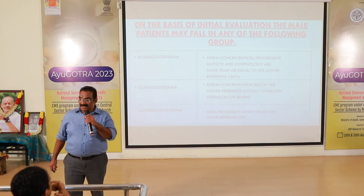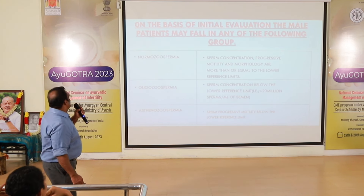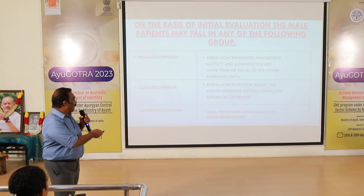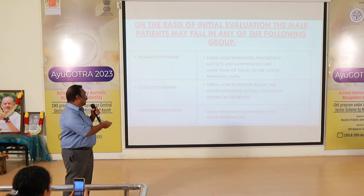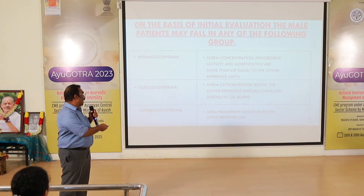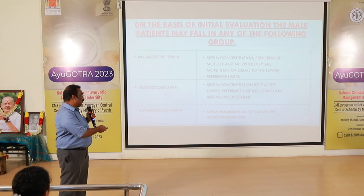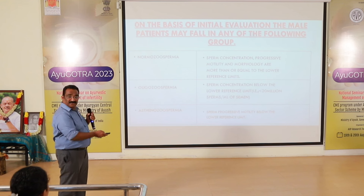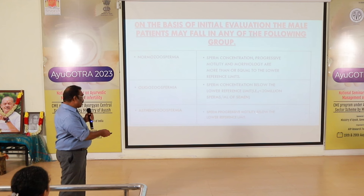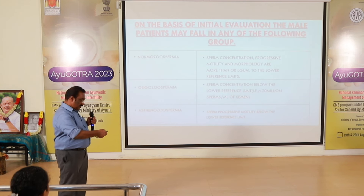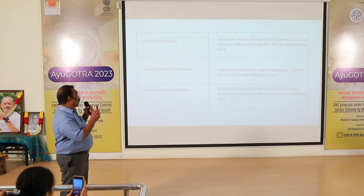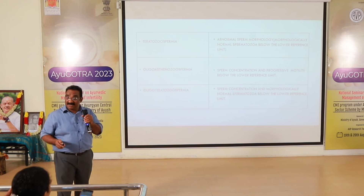Normospermia means sperm concentration, progressive motility, and morphology are more than or equal to the lower reference limit. Oligospermia means sperm concentration below the lower reference limit — that is less than 20 million sperm per ml. Asthenospermia means sperm progressive motility below the lower reference limit. Teratospermia means abnormal sperm morphology — morphologically normal spermatozoa below the reference limit, i.e., less than 4%.